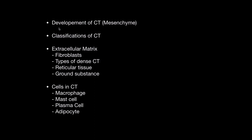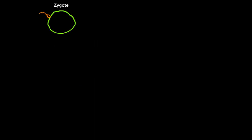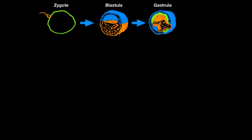Let's start with the development of connective tissue. It all starts when a sperm fertilizes an egg and becomes a zygote. The zygote divides to become a ball of cells called a blastula, which keeps dividing to become a gastrula. Here you can see that cells are starting to differentiate, with an outer layer in blue, an inner layer in orange, and a middle layer in green.